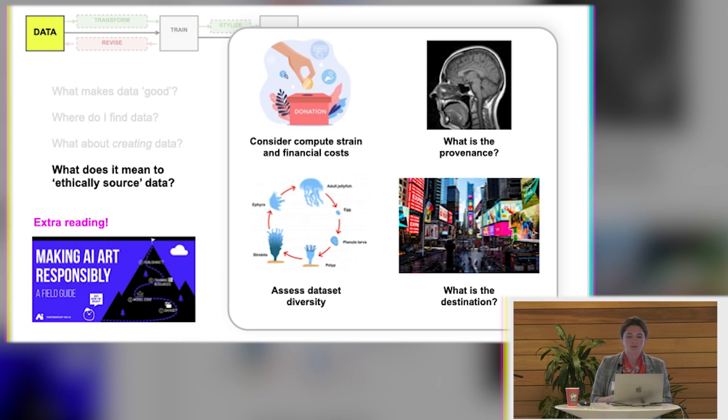So that's a, there are a lot of really good resources out there. Here were just a couple kind of notes that I've come across in my research. So for extra reading, there's a zine called Making AI Art Responsibly from the Partnership on AI, which talks all about the data set, the model code, training resources and publishing.